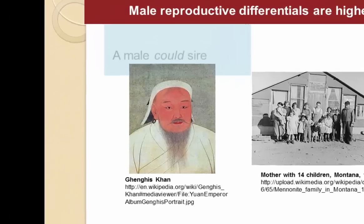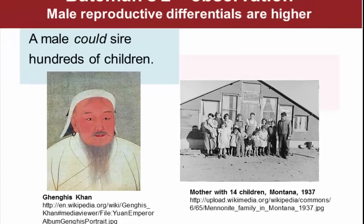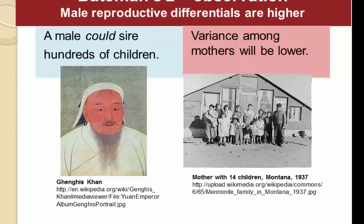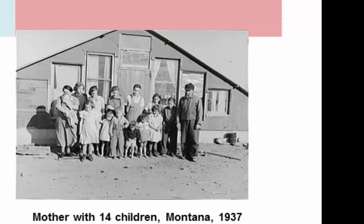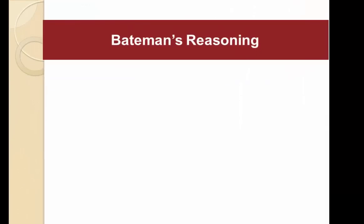Bateman's second observation was that the differentials in reproductive success can be much higher among males than among females. Potentially a single man could sire hundreds or thousands of children — a recent genetic study suggested Genghis Khan had extraordinary reproductive success. The differential among mothers is considerably lower. Here's a photo of a Montana farm family in 1937 with 14 children, near the upper limit. Families of 18 children existed, but the difference between 0 and 18 is considerably less than the difference between 0 and 1,000.